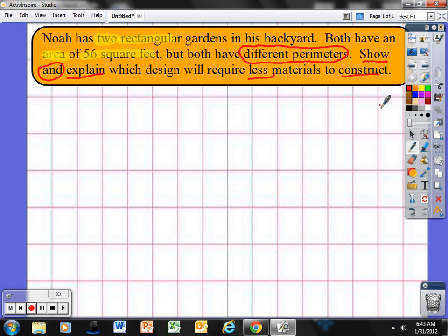So if they both have the same area, that's not going to help me with constructing, because he's going to put material, fencing around it, so that means perimeter. So first thing I know is that my area for both of these is equal to 56 square feet. So I'm going to begin to think: what are some factors of 56?